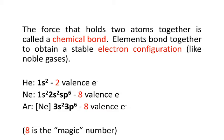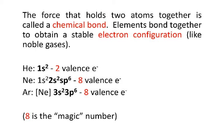These notes are on bonding and ion formation. The force that holds two atoms together is called a chemical bond. The words in red are what you need to fill in on these guided notes, so this should help. Elements bond together to obtain a stable electron configuration, just like noble gases.